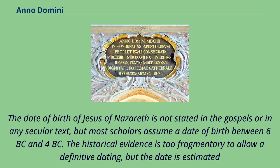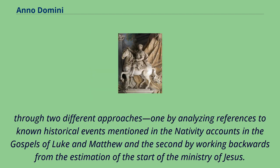The date of birth of Jesus of Nazareth is not stated in the Gospels or in any secular text, but most scholars assume a date of birth between 6 BC and 4 BC. The historical evidence is too fragmentary to allow a definitive dating, but the date is estimated through two different approaches: one by analyzing references to known historical events mentioned in the Nativity accounts in the Gospels of Luke and Matthew, and the second by working backwards from the estimation of the start of the ministry of Jesus.